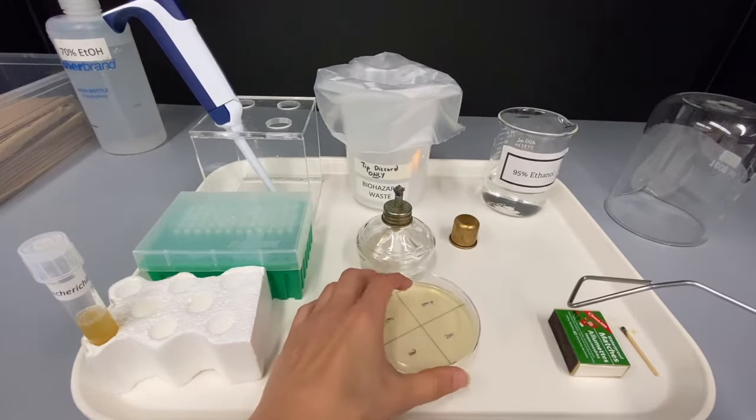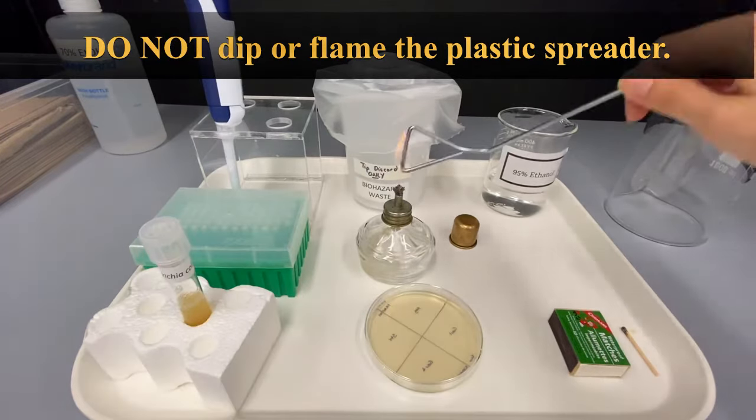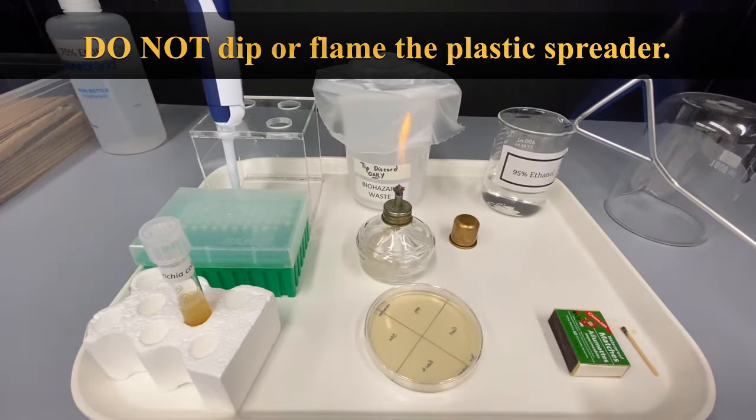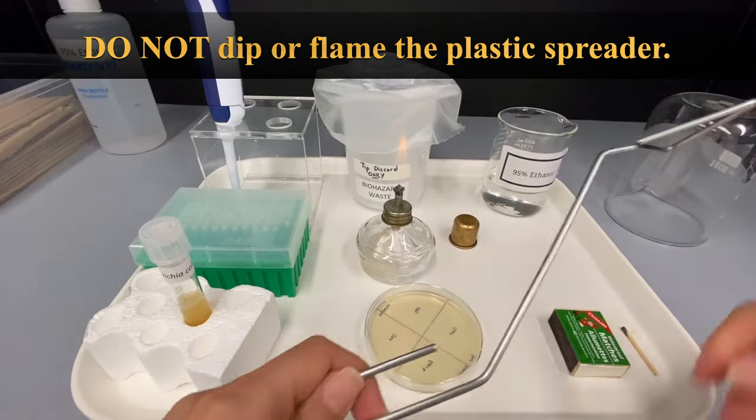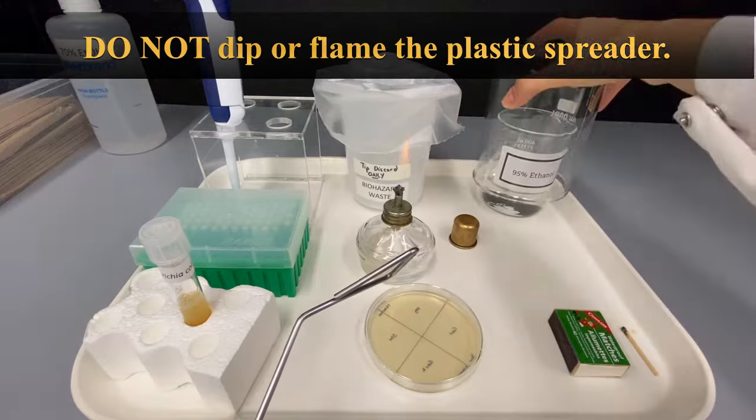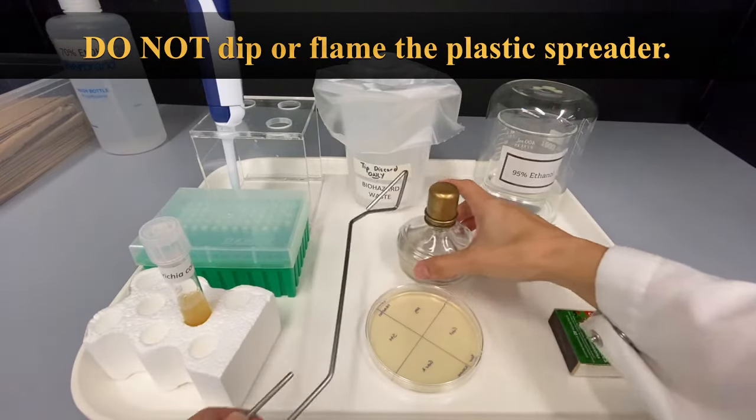Once you are done spreading your bacteria, dip the metal spreader into the 95% ethanol, pass it through the flame and wait for the ethanol to burn off. Cover the 95% ethanol and extinguish the flame by covering it with a cap. Return the spreader to the tray.